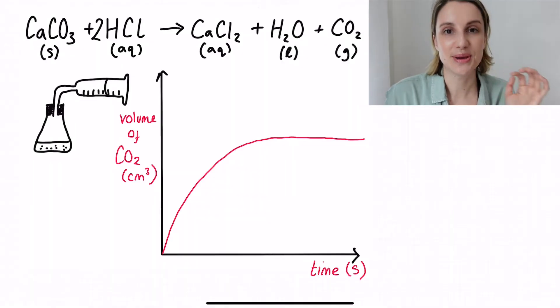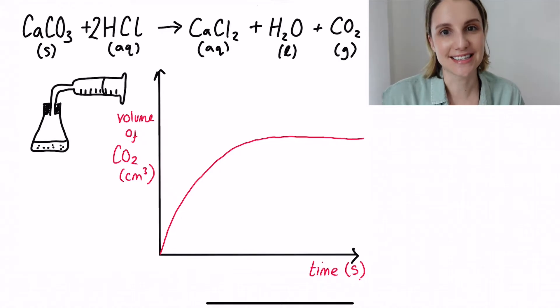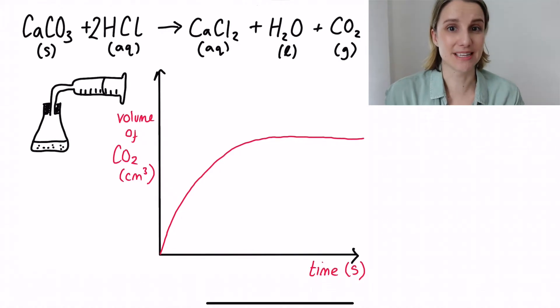This example reaction between calcium carbonate and hydrochloric acid is a pretty standard example in most exam syllabuses. It produces a gas, carbon dioxide, which means that we can monitor the rate of reaction using a gas syringe. If we plot a graph of time versus volume of gas collected, we get a graph that looks a bit like this.